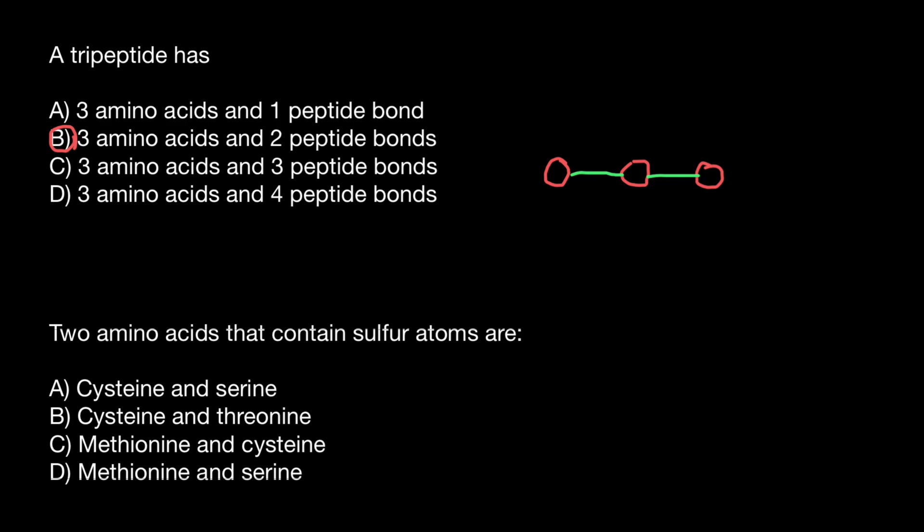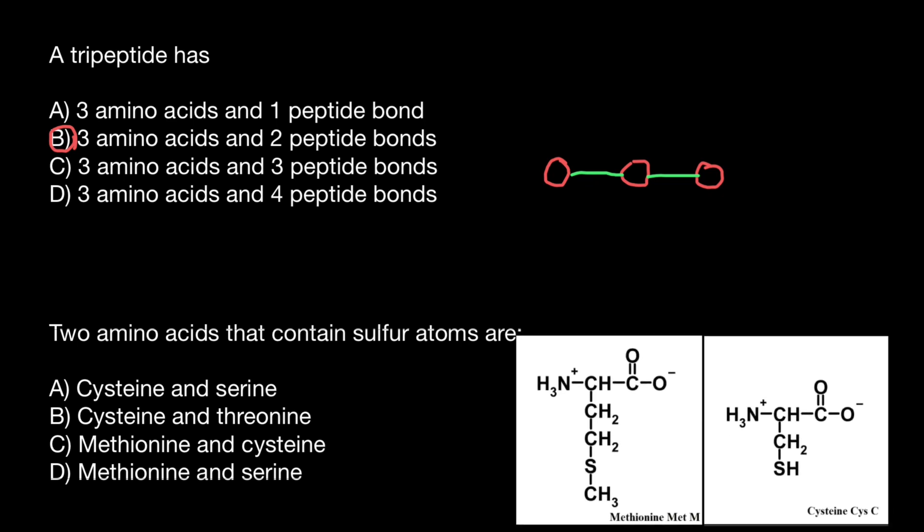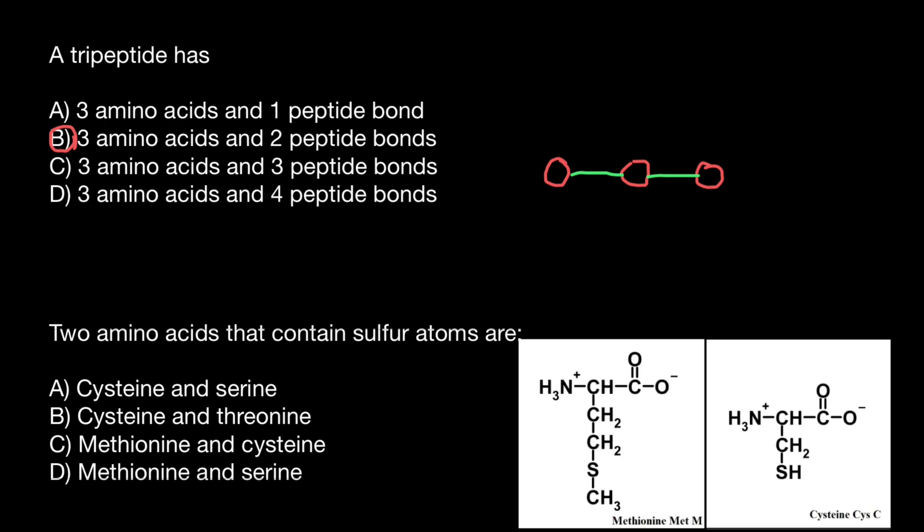And next question: two amino acids that contain sulfur atoms are, and you have to choose one of these answers. There are actually only two amino acids that contain sulfur. And these two amino acids are methionine and cysteine.